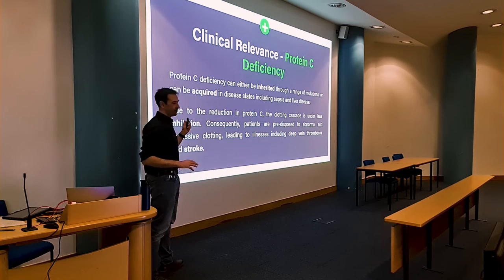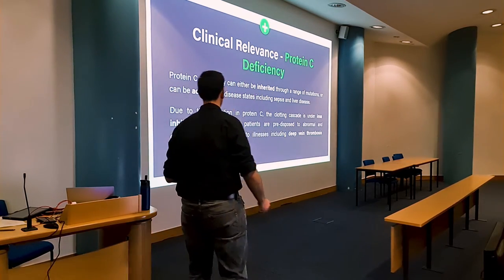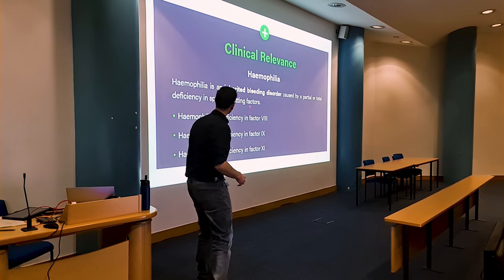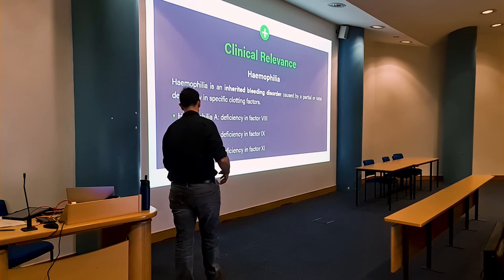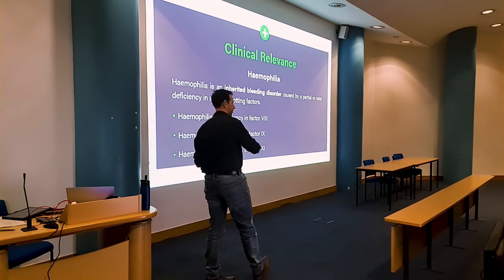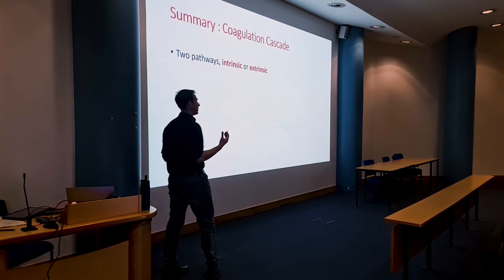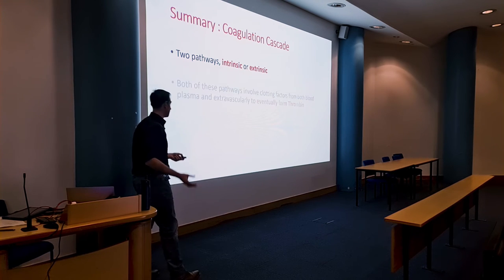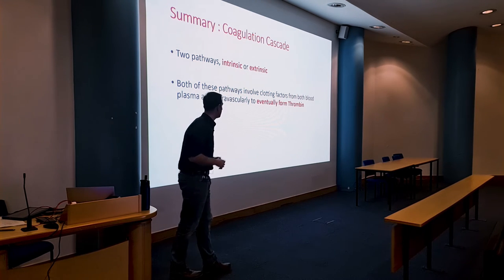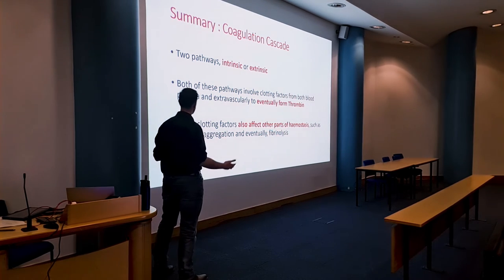For your own interest while revising: look into deficiency of protein C and the consequences it would have, and also hemophilia — the different types and which factor deficiencies cause which types of hemophilia. This makes sense once you've seen the clotting cascade and understand what the different factors are. But that's just for your own interest.